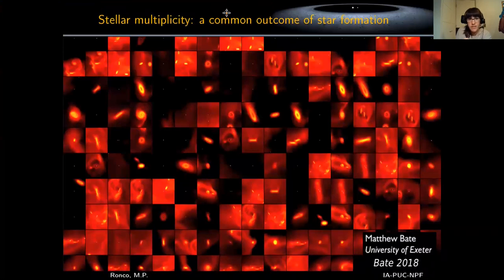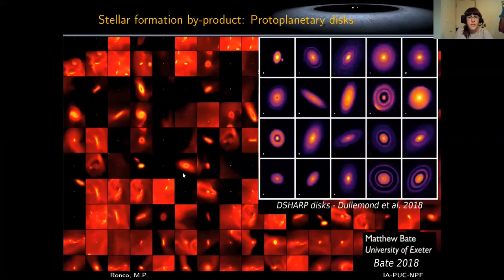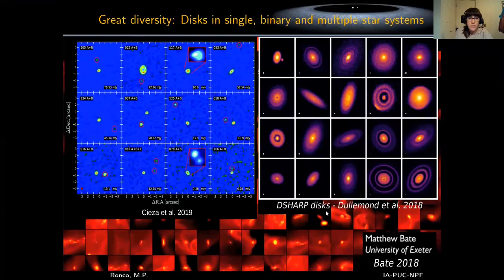Stellar multiplicity is the most common outcome of star formation. In the background you can see the results of the first population synthesis study of star cluster formation and disk evolution developed by Bate in 2008 through hydrodynamical simulations. A very common byproduct of star formation is the formation of protoplanetary disks, like those resolved by ALMA within the DSHARP project — but these are orbiting only one star.